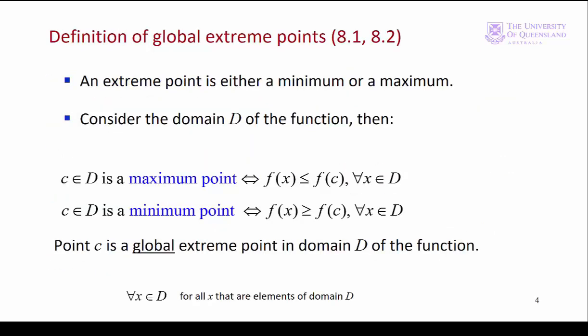Of course if we're looking for an extreme point we need to find the domain. We have a point c and the value of the function at point c is greater than all the other values of the function over the domain d. Then we have a maximum point. If on the other hand f of c has the lowest value of all the values of the function f of x over the domain d then we have a minimum point.